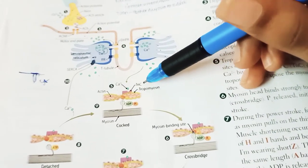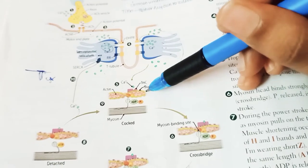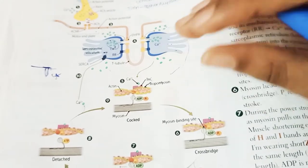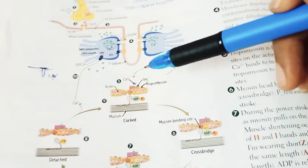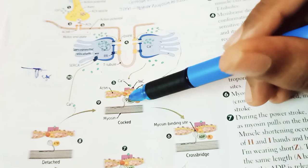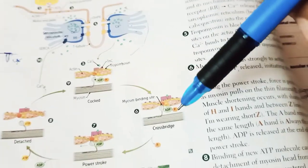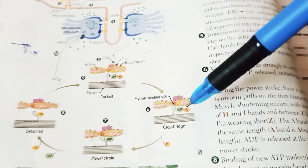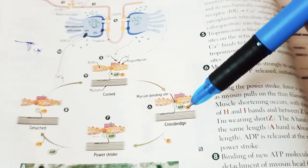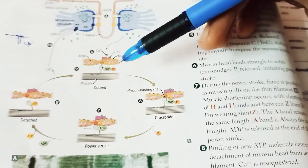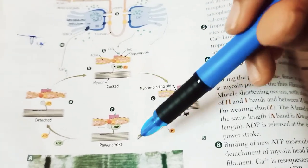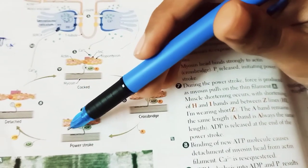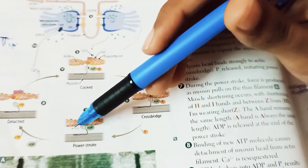When tropomyosin is moved away from the binding sites, myosin can bind directly to actin, forming a cross-bridge. In this step, ADP and inorganic phosphate are released, leading to the power stroke — myosin pulls on the thin filament, causing muscle shortening.